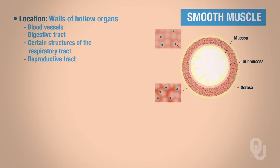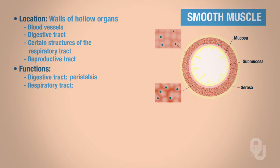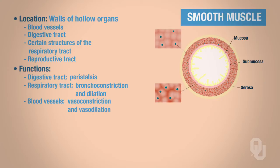There are lots of locations for smooth muscle in the human body, and the location of that muscle will dictate its specific function. The smooth muscle lining the walls of the digestive tract performs peristalsis, allowing stuff to move through your digestive tract. The smooth muscle lining parts of your respiratory tract allows for bronchoconstriction and bronchodilation. The smooth muscle lining the walls of the blood vessels allows some blood vessels to vasoconstrict and vasodilate.